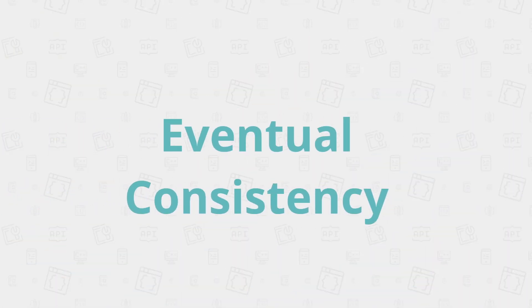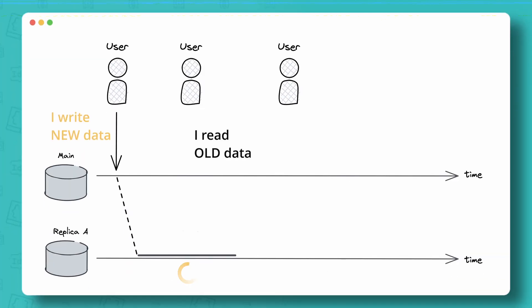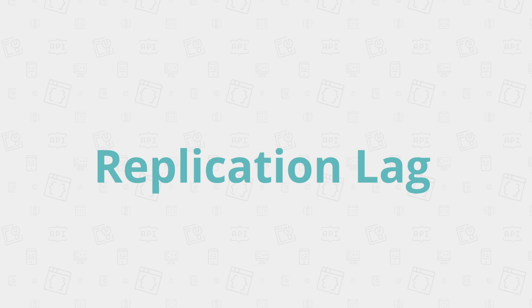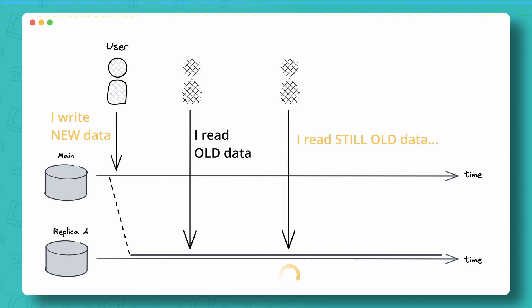By design, the main replica pattern only provides eventual consistency. That means there is always a delay between the point in time where changes are made to the main node and the time where those changes are available for reads on some replica, and even later on all replicas. This delay is actually called replication lag. The higher the replication lag, the more the main and the replicas get out of sync.